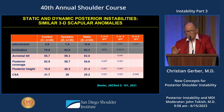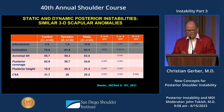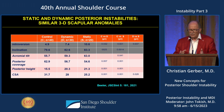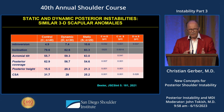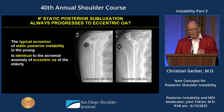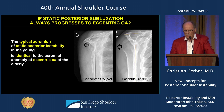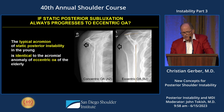Between the dynamic and the static, there was only one significant difference: the statics have a shorter acromion. Now, what does a short acromion mean? A short acromion leads to osteoarthritis — small CSA is associated with arthritis. So you have a posterior instability and a very short acromion. We could show that the typical acromion of static posterior instability in the young is identical to the acromion anatomy of eccentric osteoarthritis of the elderly.